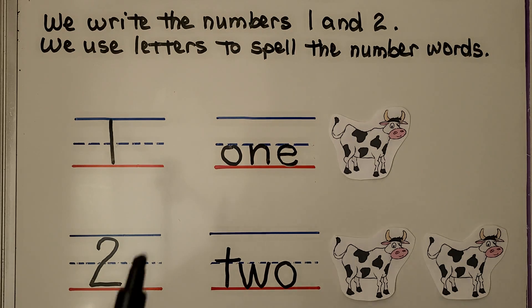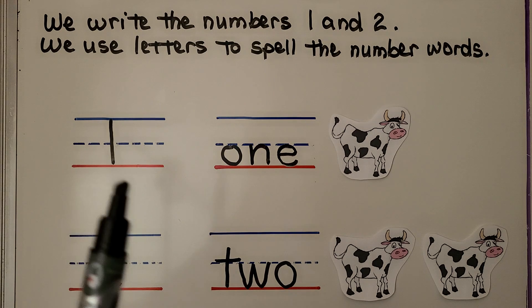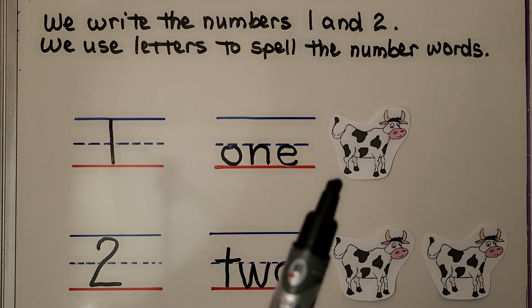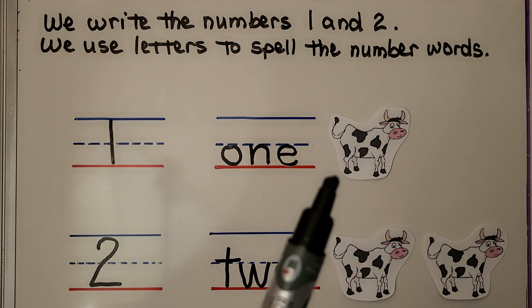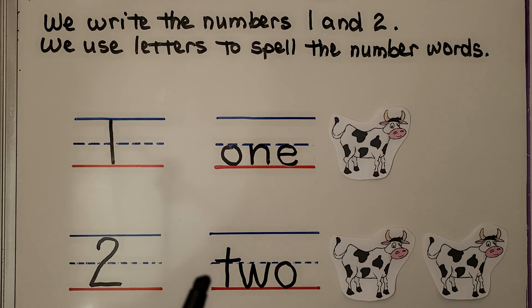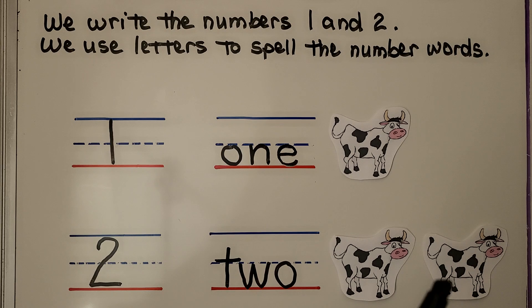This is the number one. This is the word one. There's one cow. This is the number two. This is the word two. We have one, two cows.